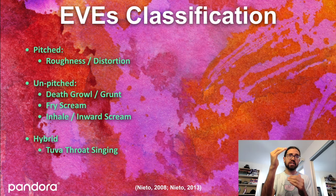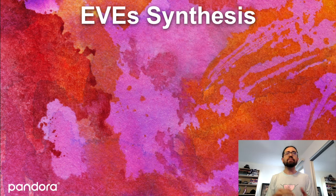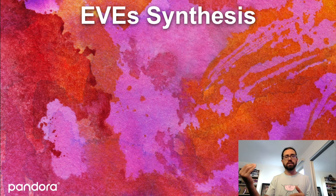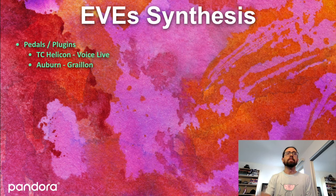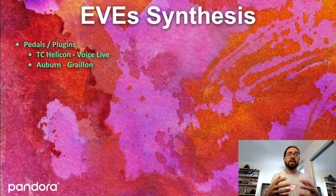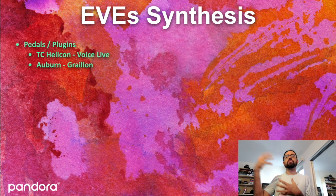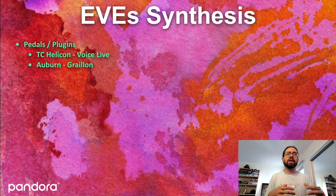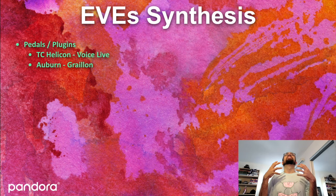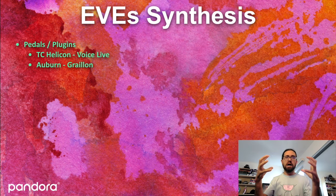Now that we're on the same page, I'll use this vocabulary for the rest of the talk. There have been attempts to synthesize these extreme vocal effects. By synthesizing, I don't mean only starting from scratch, but also taking an audio signal of a vocalist and transforming it to produce extreme vocal effects. There are certain pedals and plugins. The ones I know and have used are TC Helicon and The Voice Live — a really great pedal I've used mostly for very distorted radio-type vocals. The Auburn Gralion is a plugin that also lets you play around with vocals. I'm not familiar with anything extremely convincing that converts a clean voice into a death growl or something like that.